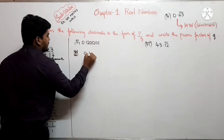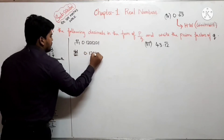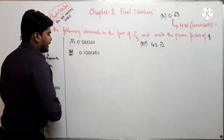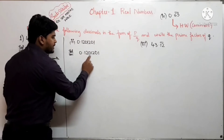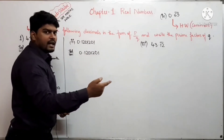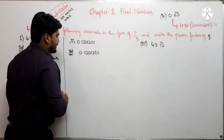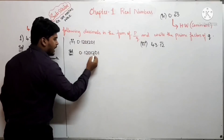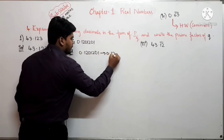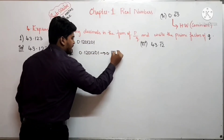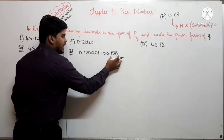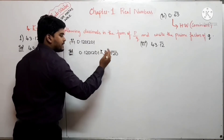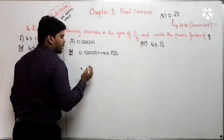अब हमें दिया गया है 0.1201201201... — यहाँ पर अगर ध्यान से देखो तो 120, 120 repeat होते जा रहा है। तो हम इसको 0.\(\overline{120}\) लिख सकते हैं, यानी 120 के ऊपर bar लिख लेंगे।